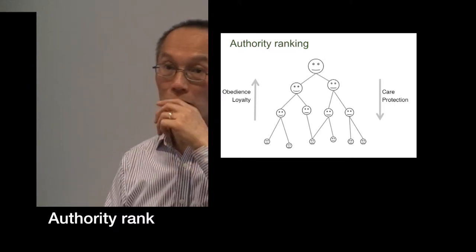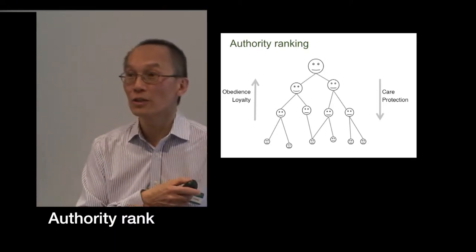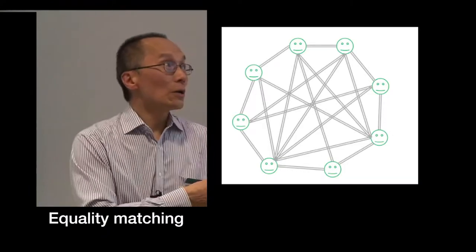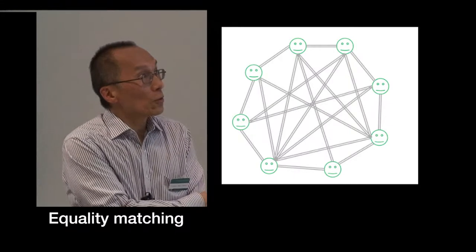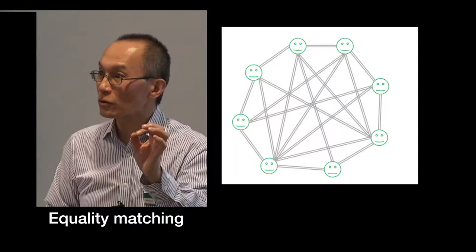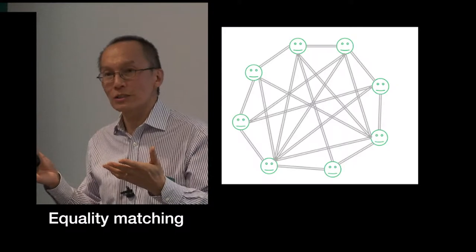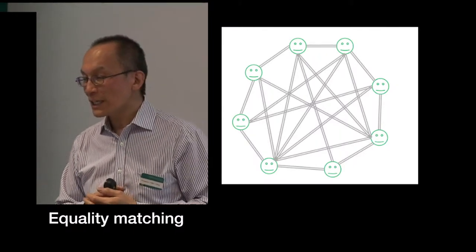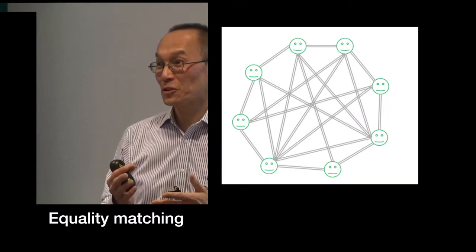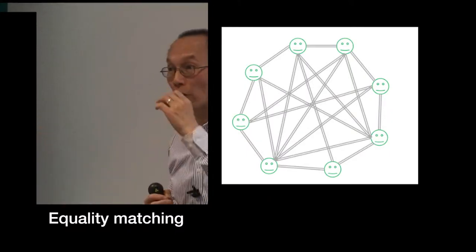Also, things can go wrong. If you are a dictator, you will use these structures in order to do things which we wouldn't find acceptable. Equality matching is the next moral model, where everybody gets an equal share of everything. We're starting to focus not on groups but on individuals. Tit-for-tat strategies are what you would use in order to organise behaviour — equally dividing pieces of cake within a family so that no one gets a different amount.